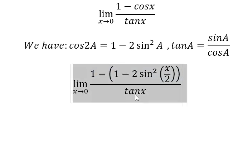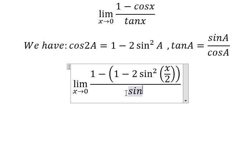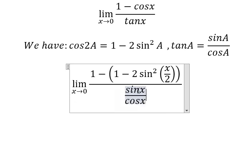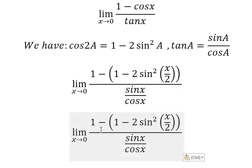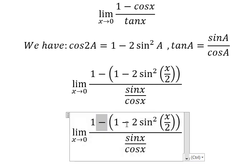Next, about tanx, we change by sinx over cosx. 1 minus 1, we cancel negative and negative, we have positive.